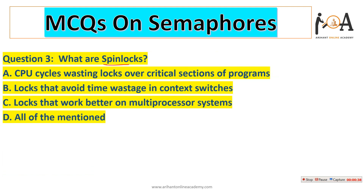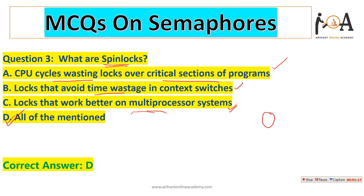The next question is: what are spin locks? Spin locks are used under SEMA 4 to provide a bounding limit on waiting — meaning waiting should be bounded so that a process will eventually execute. Option A: CPU cycle wasting locks over critical section — yes, that is one functionality. Option B: locks that avoid time wastage in context switches — also a use of spin locks. Option C: locks that work better on multiprocessor systems — also a functionality. So the most accurate answer is option D: all of the mentioned.